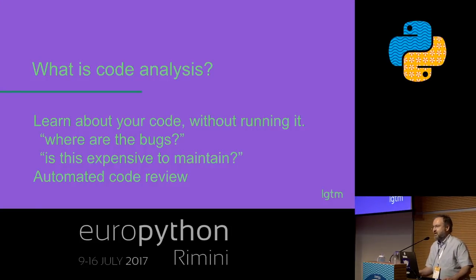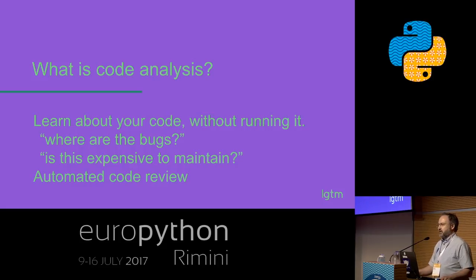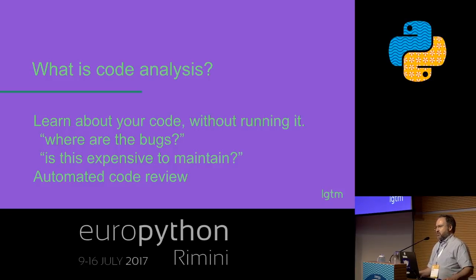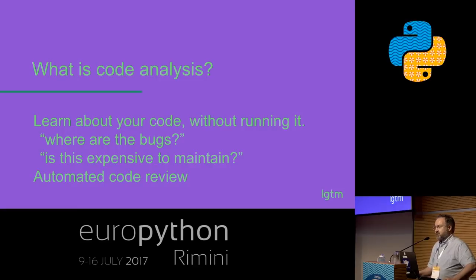So what is code analysis? Code analysis is finding out facts about your program — basically anything that you might think is interesting. That could be metrics, complexity in the code, hot spots of complexity, all sorts of things. But one particularly interesting set of facts are bugs or likely bugs.